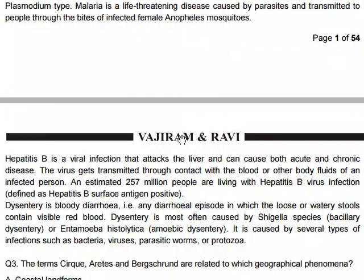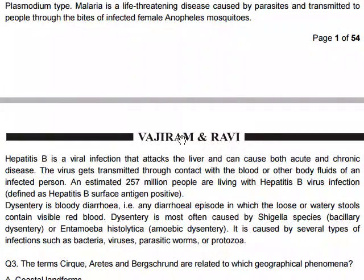Dysentery is a bloody diarrhea — any diarrhea episode in which loose stools contain visible red blood. Dysentery is most often caused by Shigella species (bacillary dysentery) or Entamoeba histolytica (amoebic dysentery). It is caused by several types of infection including bacteria, viruses, parasitic worms, and protozoa.